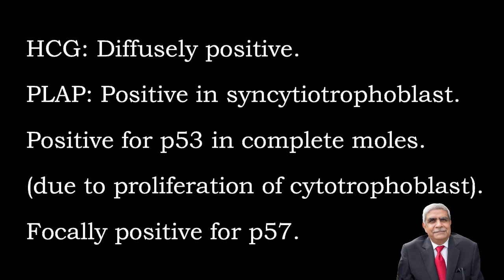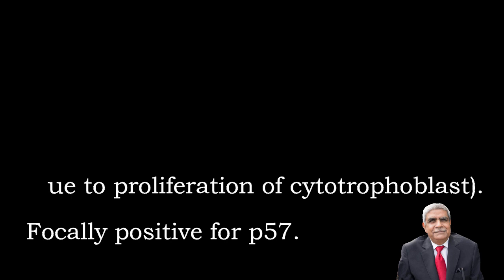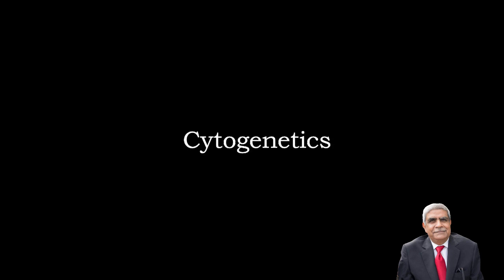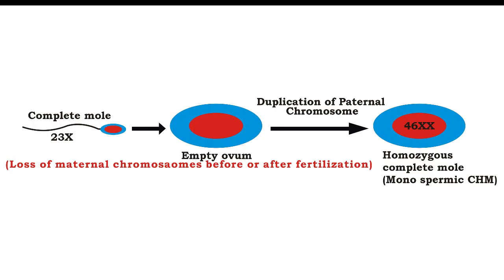Immunohistochemistry: HCG is diffusely positive. PLAP is positive in syncytiotrophoblast. There is positivity for p53 in complete moles due to proliferation of cytotrophoblast, and focal positivity for p57.